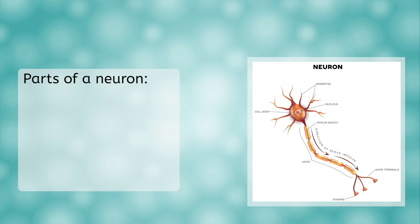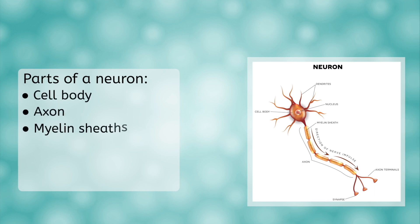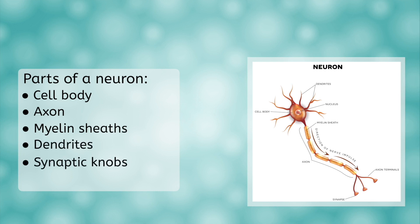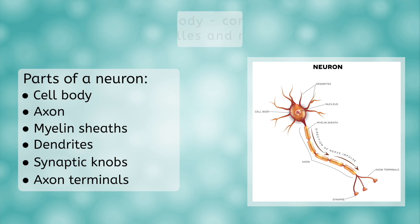Neurons have a cell body, an axon, myelin sheaths, dendrites, and synaptic knobs at the end of the axon terminals. These structures allow an electrical impulse to transmit throughout the body.